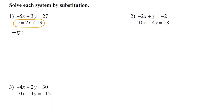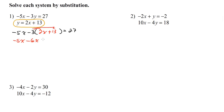So we're going to write this as negative 5x minus 3, and instead of y we put a parenthesis, equals 27. Then we plug in 2x plus 13 for y. So we have negative 5x, and we need to distribute. Negative 3 times 2x is negative 6x, and negative 3 times 13 is negative 39, equals 27. Now we can combine like terms: negative 5x and negative 6x is negative 11x.